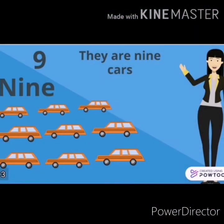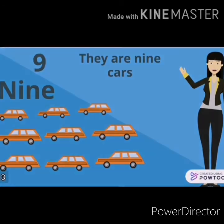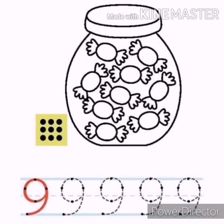What's this number? Number nine. How many cars are there? Let's count: one, two, three, four, five, six, seven, eight, nine. There are nine cars. What's this number? Number nine. How many dots are there? Let's count: one, two, three, four, five, six, seven, eight, nine. There are nine dots.